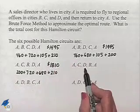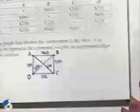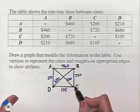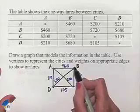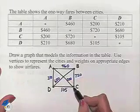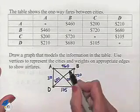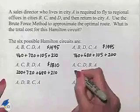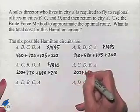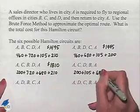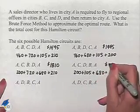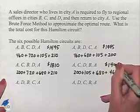A, C, D, B, A. We're going to have A to C to D to B to A. That's going to be 200 plus 105 plus 680 plus 460. That total is 1,445.